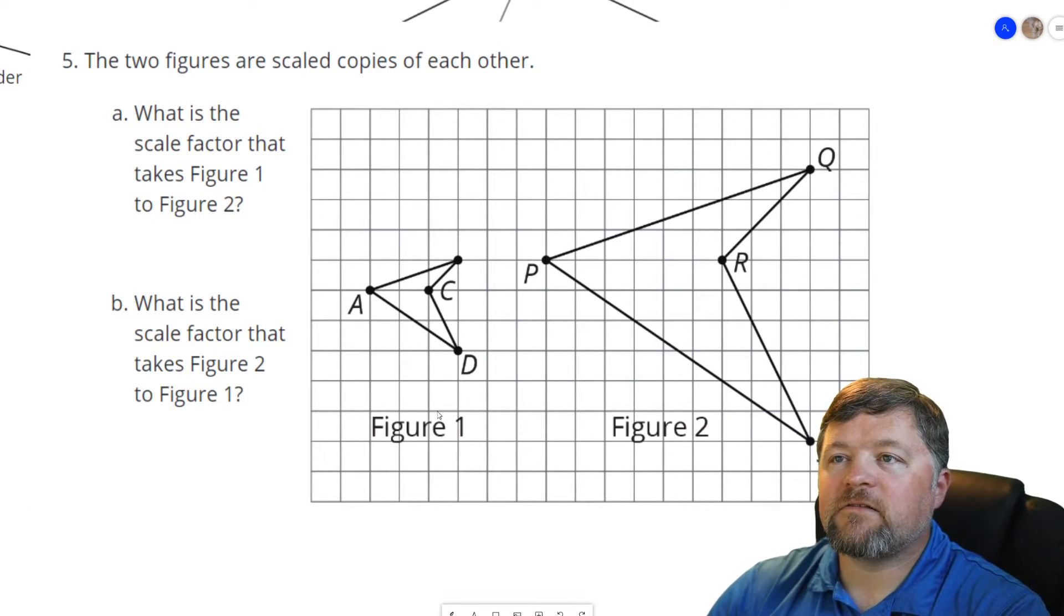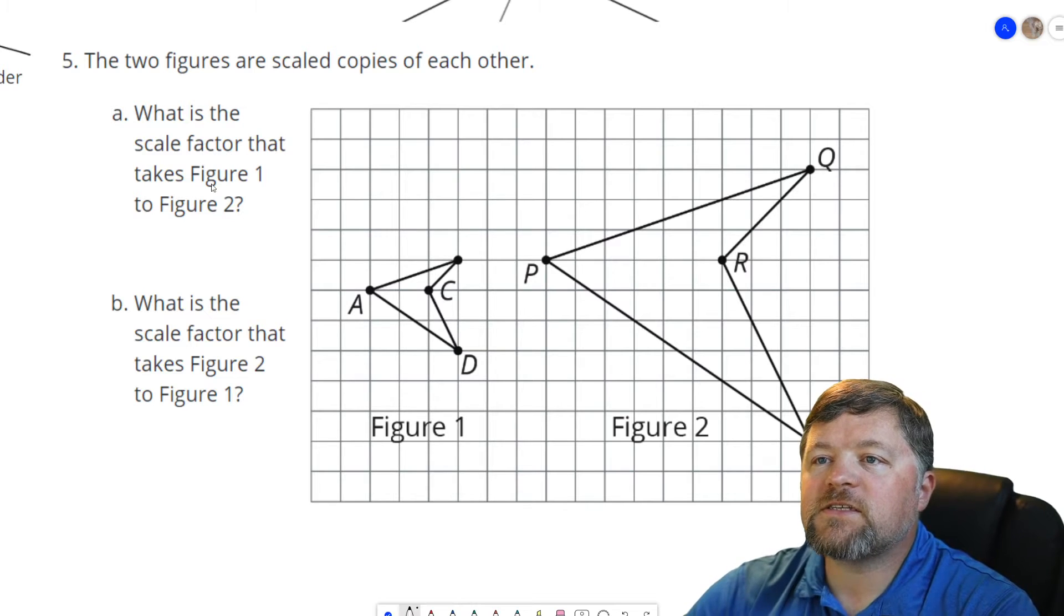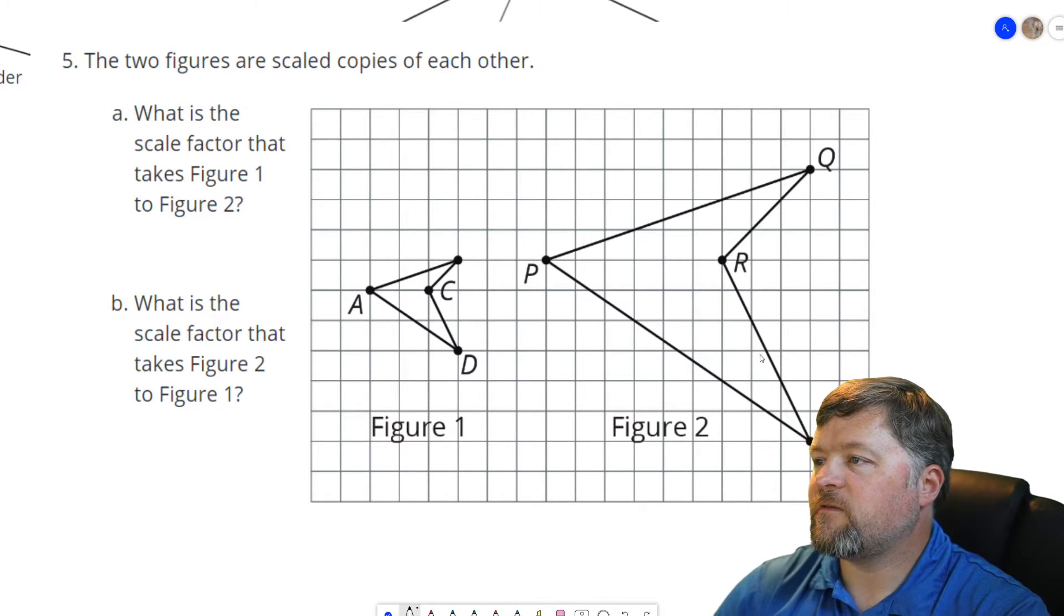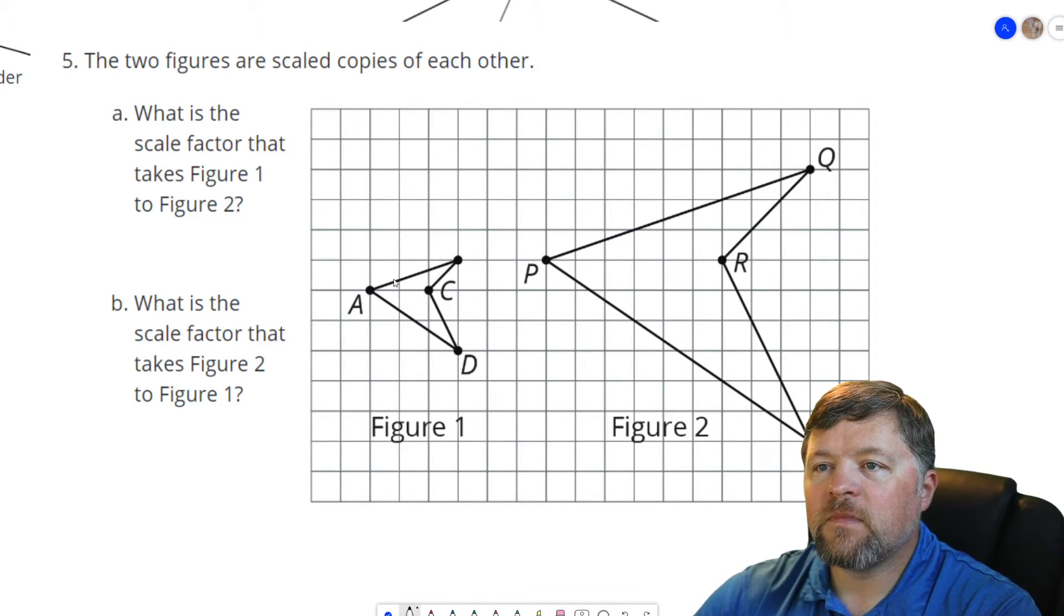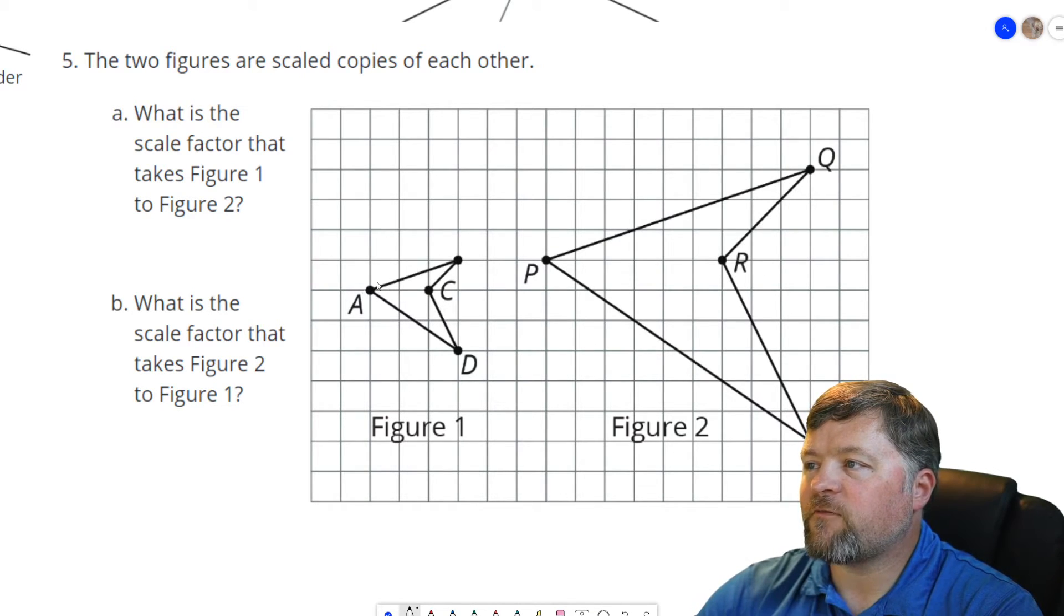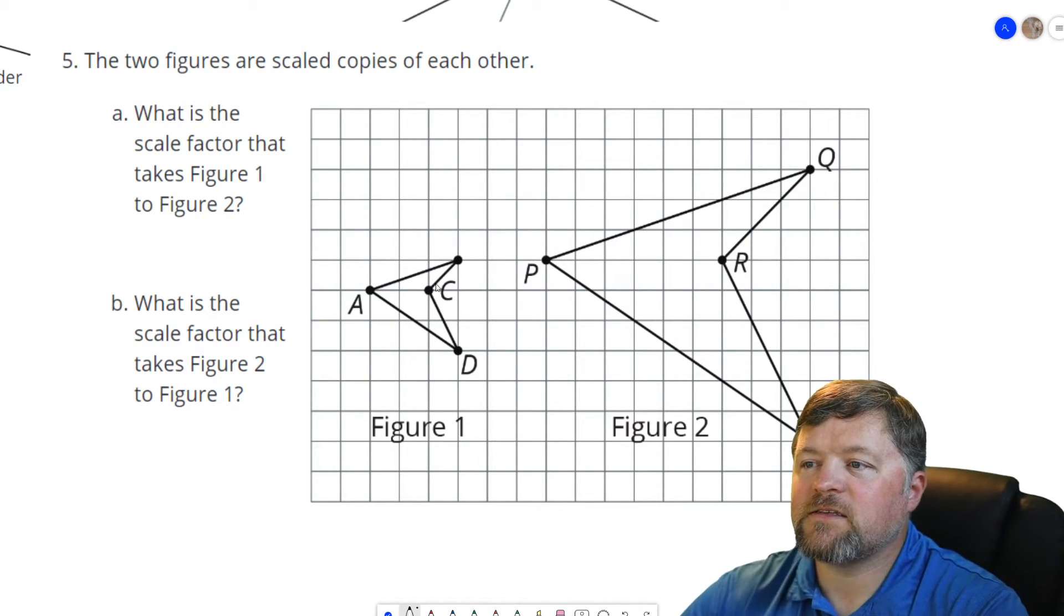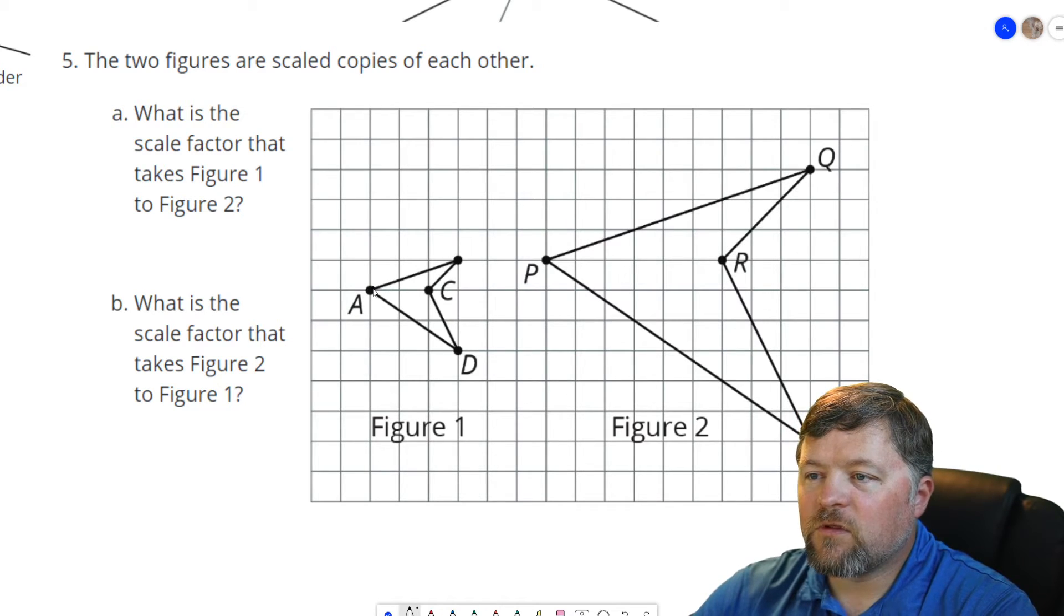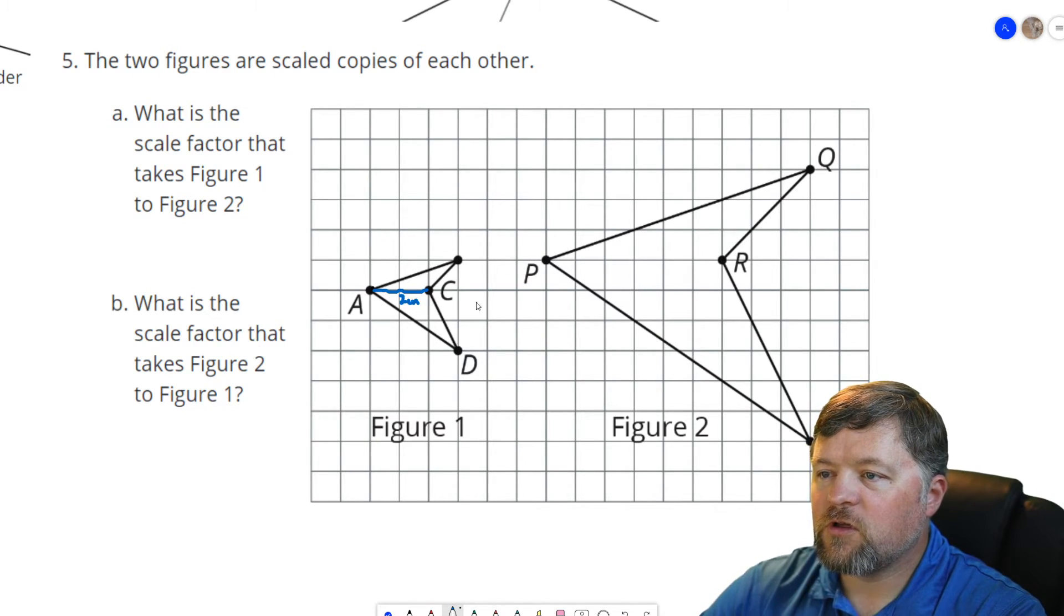The two figures are scaled copies of each other. What is the scale factor that takes figure one to figure two? Which means we need a point of reference here. How many times bigger is it to go from this to this? Well, this distance, I'm going to give that a different color. That distance is two units.